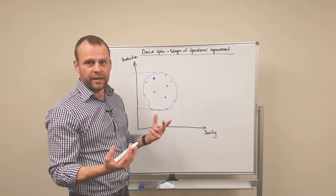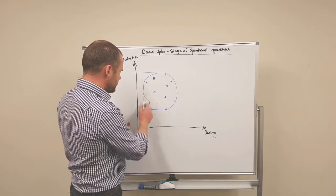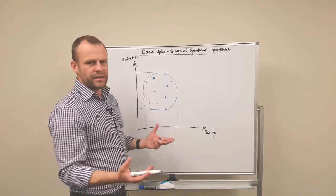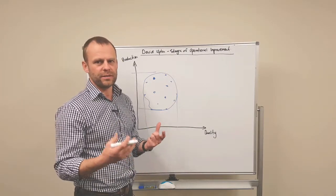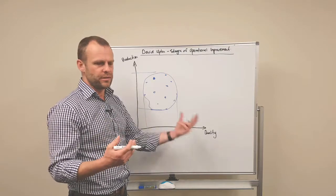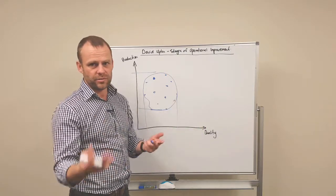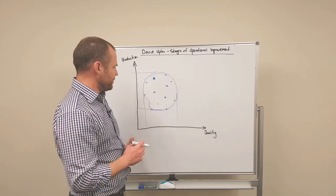And the customer of this organization has no idea what quality they're going to get either. So it's really difficult for an operation to provide what it needs to its shareholders or to its customers when it's working like this.